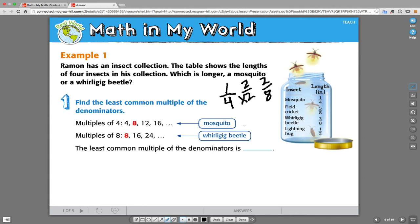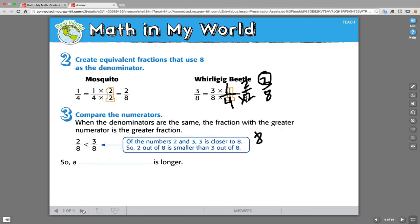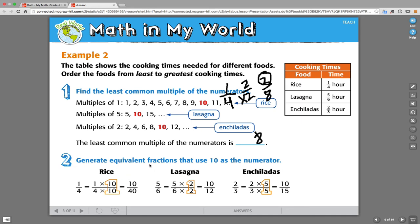And then it's easy to compare. Basically, we have eight as our common denominator. Well, three is bigger than two. And so the whirlygig beetle is longer.